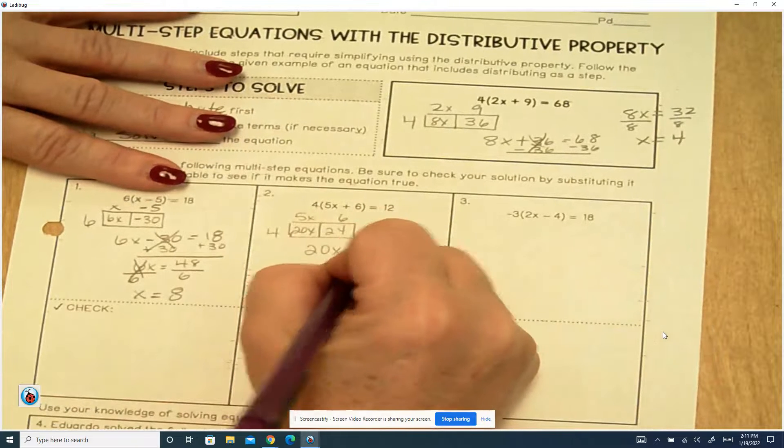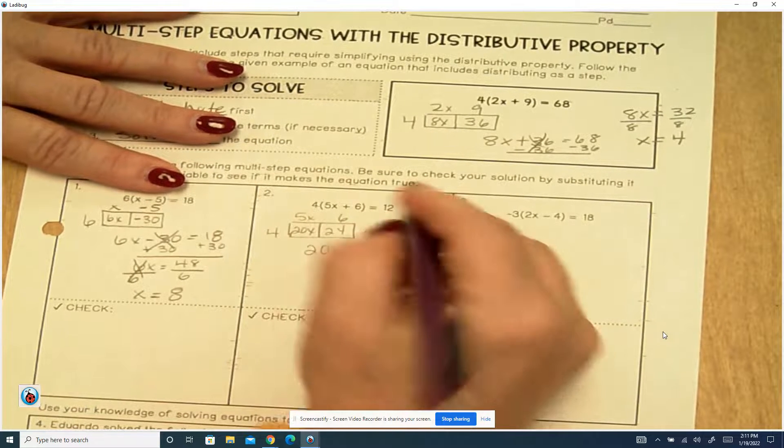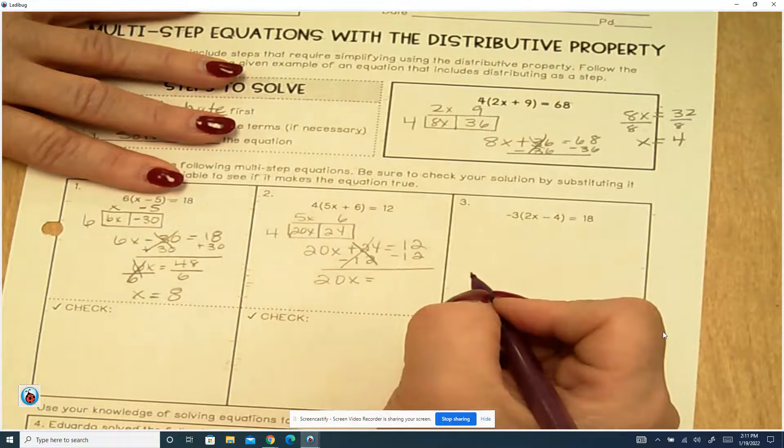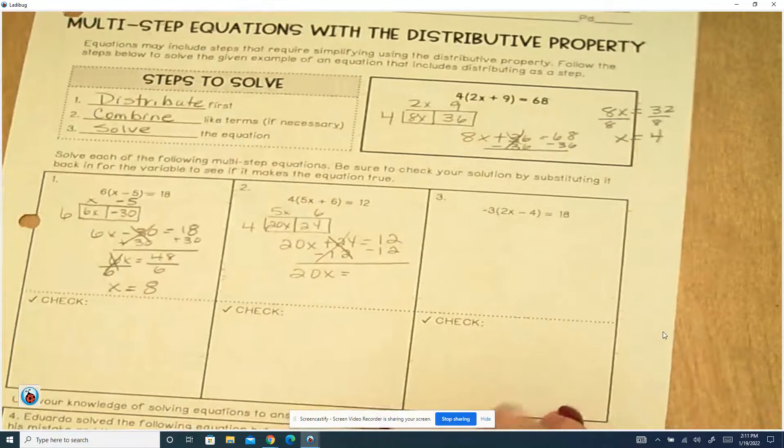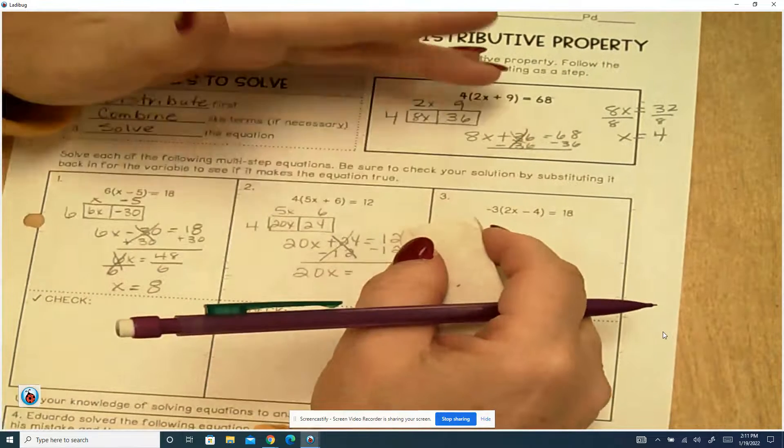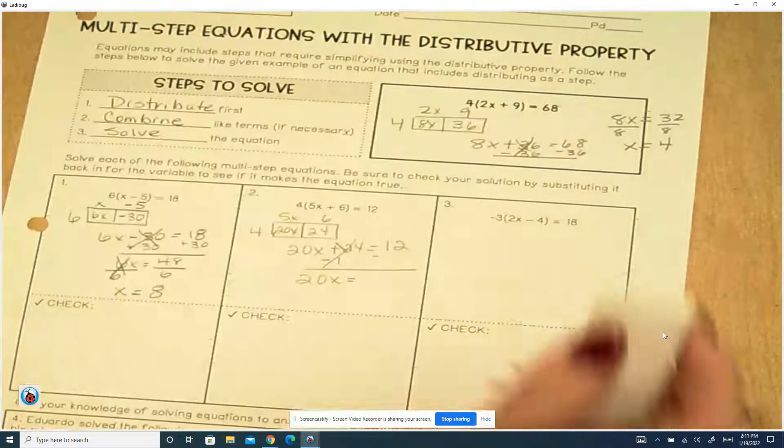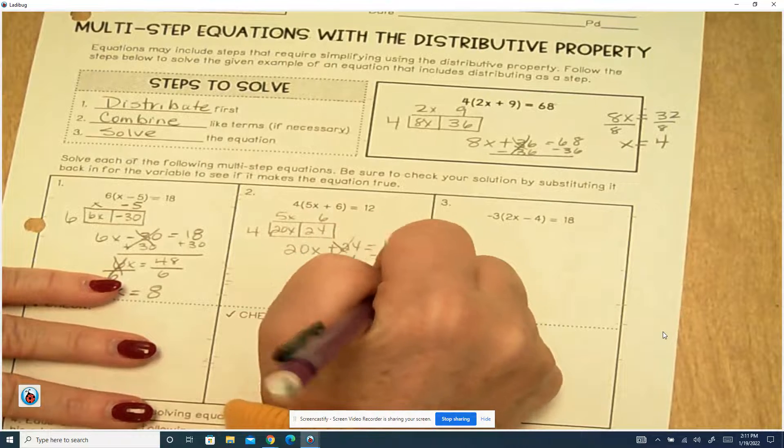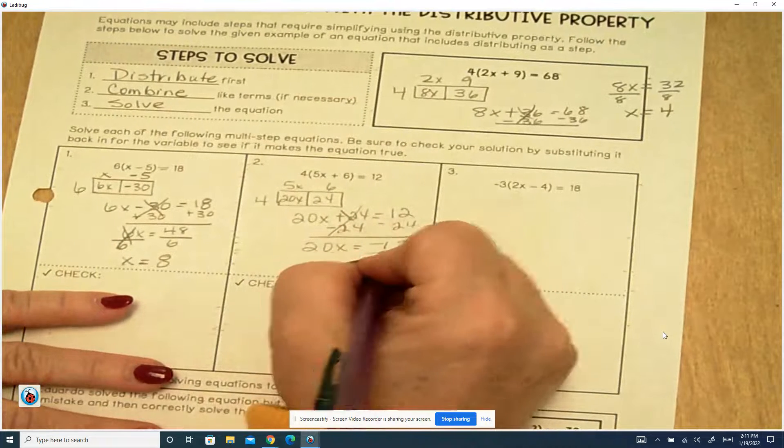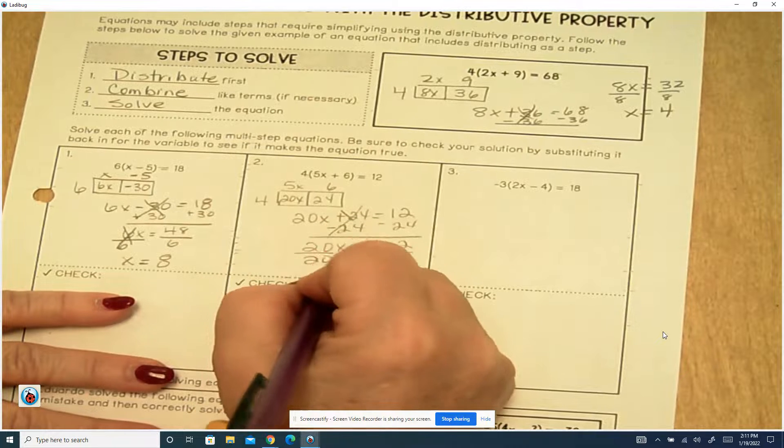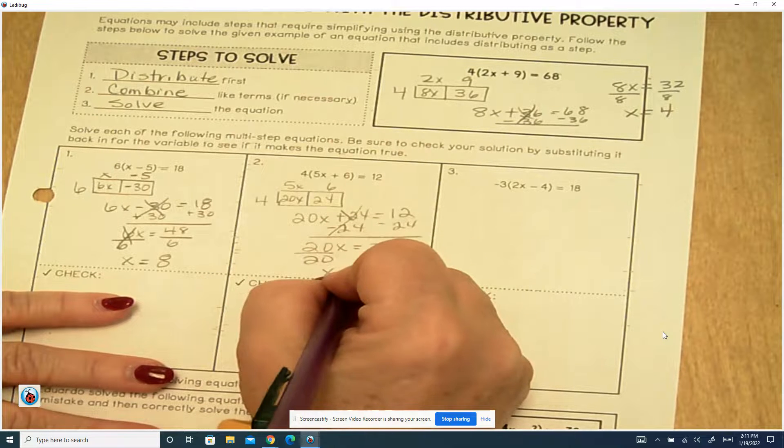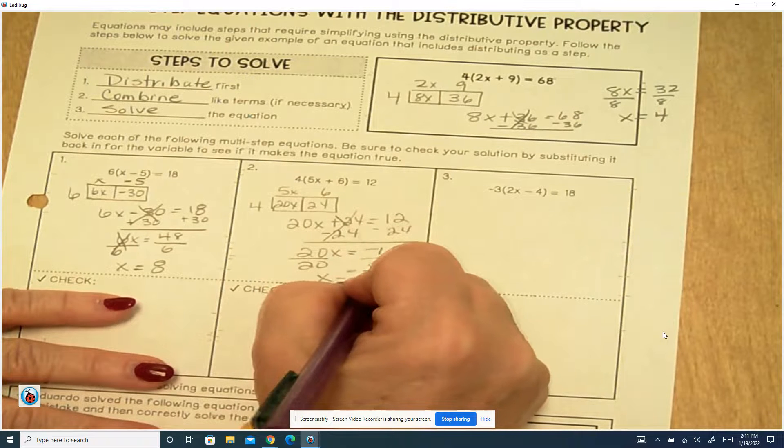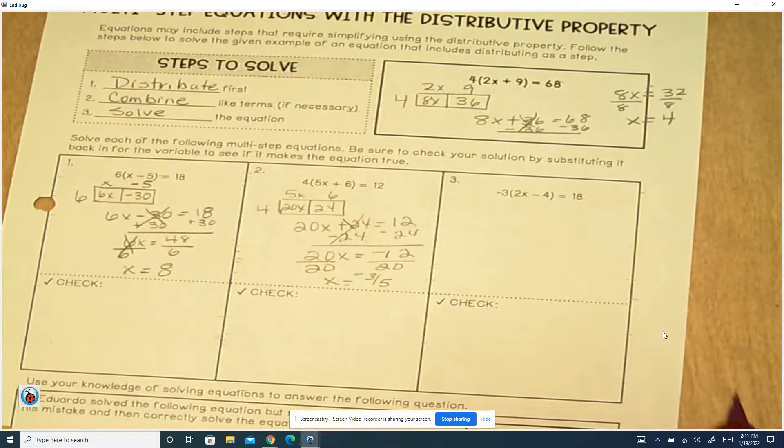Minus 12 from both sides. This cancels out. 20x equals, this should be a minus 24. This is a minus 24, guys. And you end up with a negative 12. And you divide by 20 on both sides. x equals a negative by a positive is a negative 12 over 20 is reduced, is 3 fifths. You can give me that in decimal or fraction.